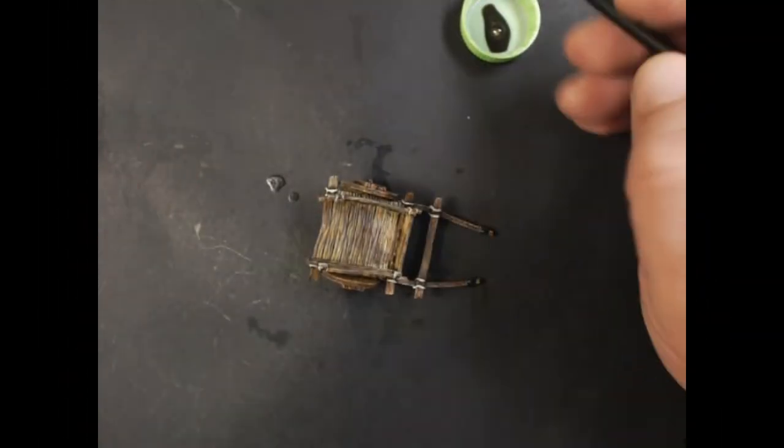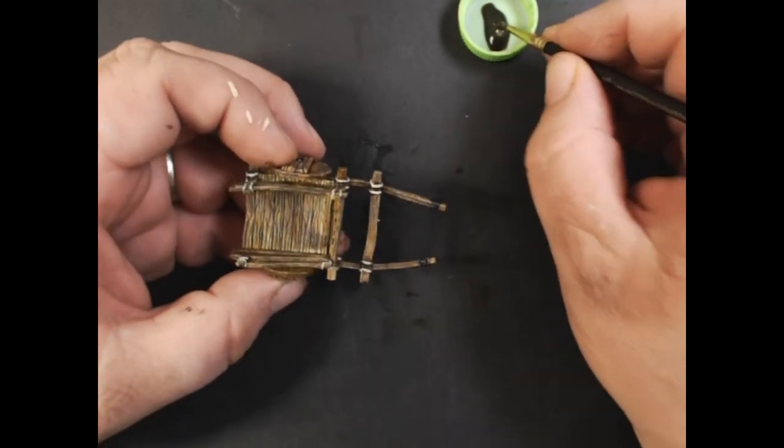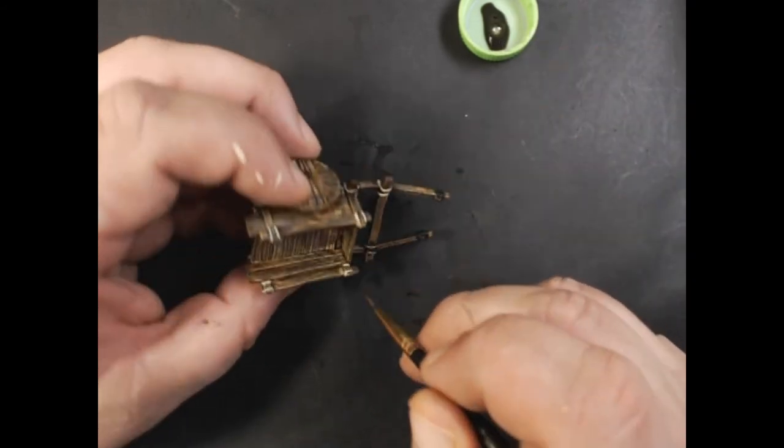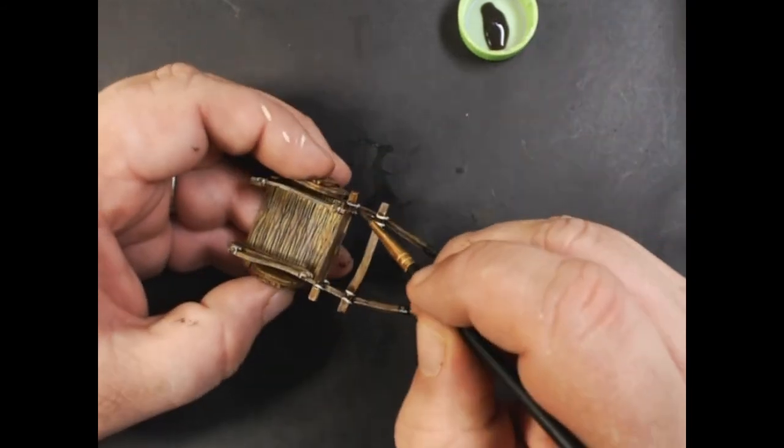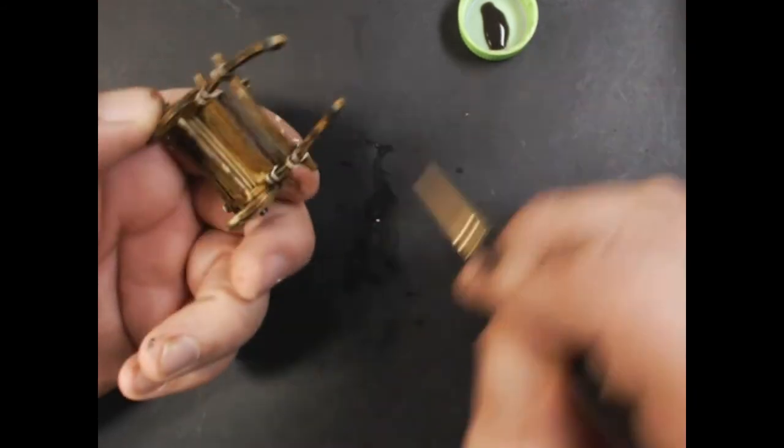Next up, we've got some Army Painter Soft Tone Wash. I'm just going over the ropes to tone them down a little bit. Don't need to worry about getting any of the wash on the rest of the wood because it'll just blend right in.